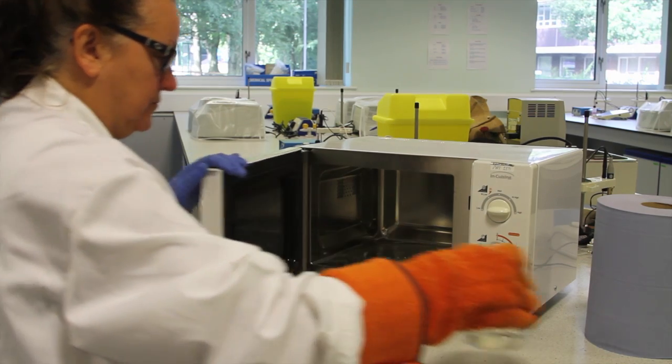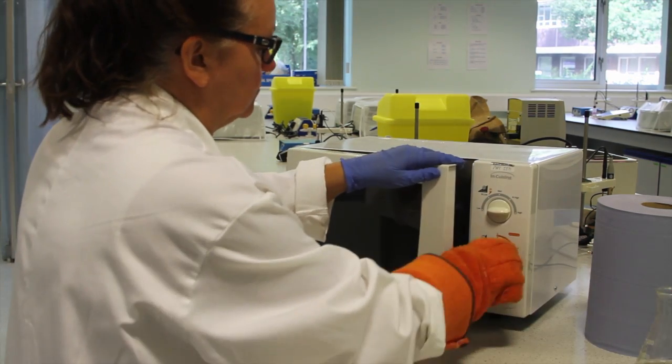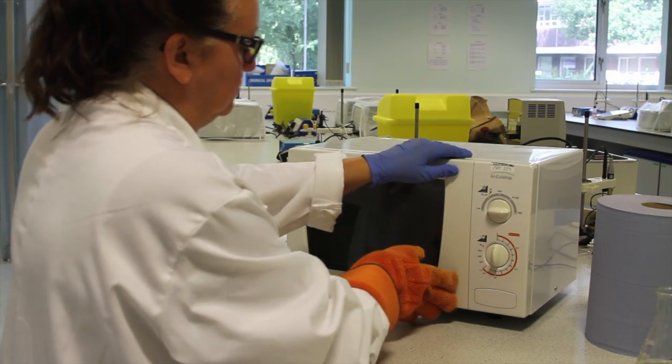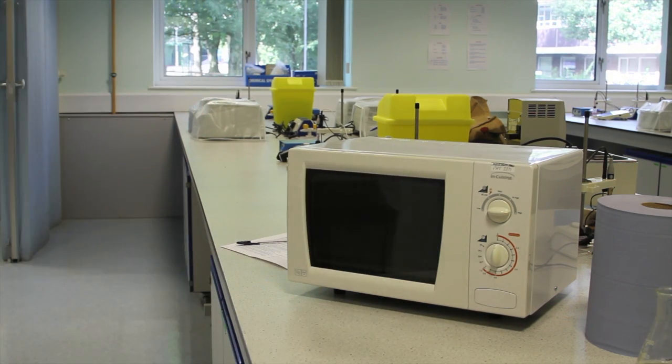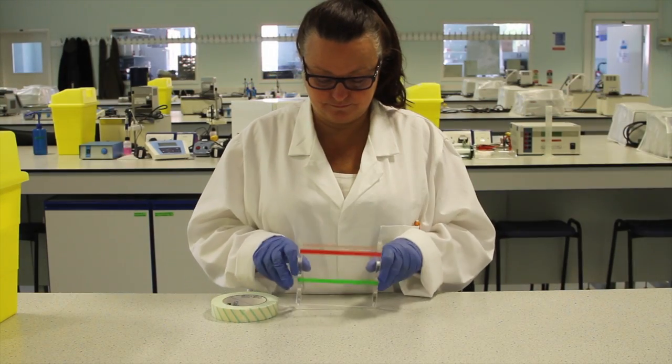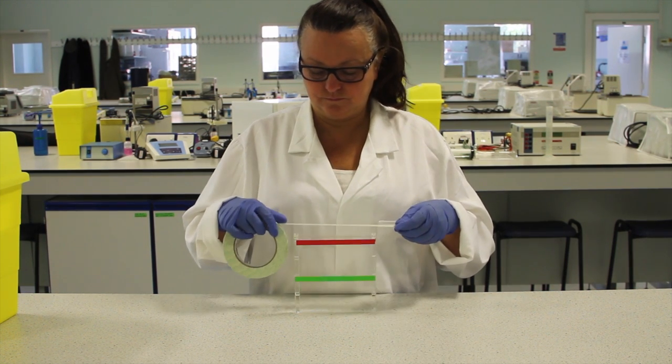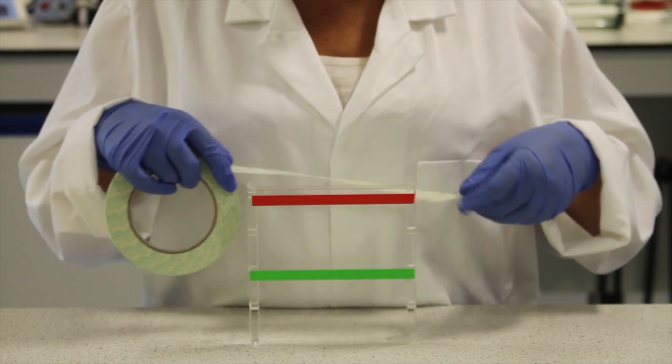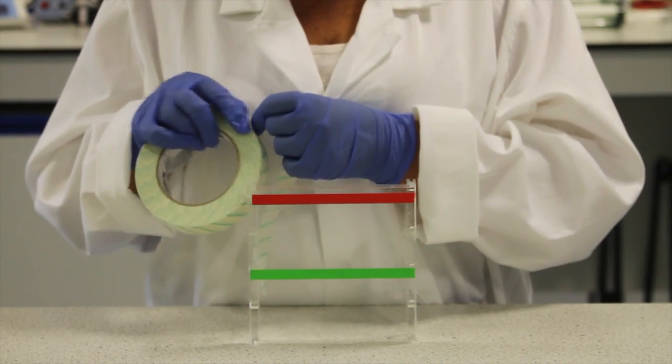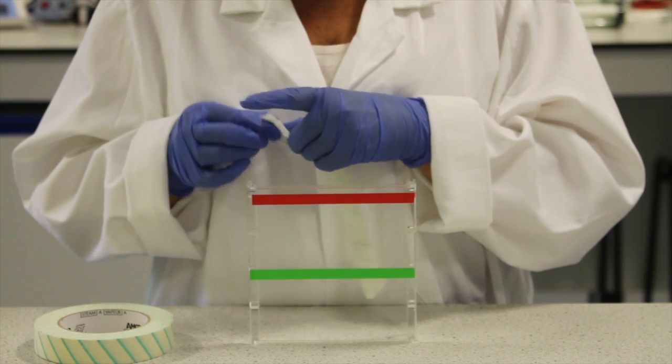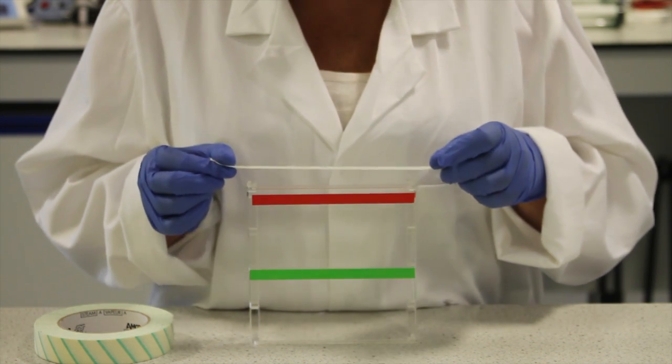Ensure you are wearing the heat proof glove before removing the hot flask. While the gel cools, prepare the gel casting stand. The casting stand needs to be sealed off at each end using tape so that the gel won't run out. To seal the casting stand, tear off a length of tape and attach it securely along the open edge of the stand.